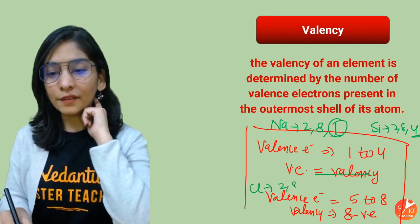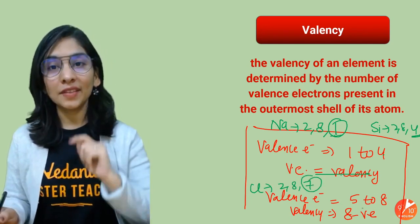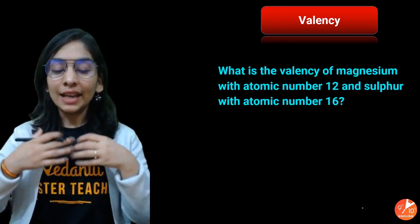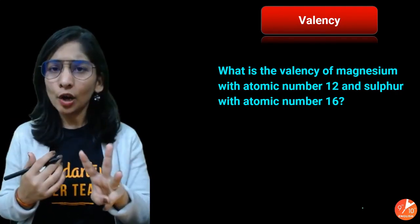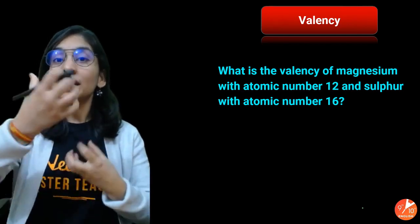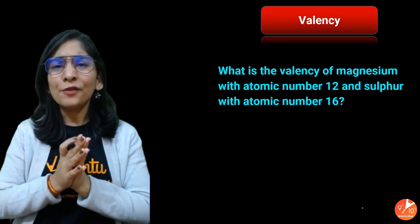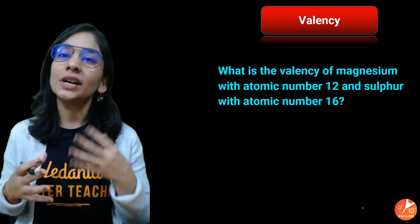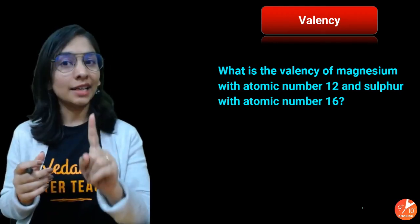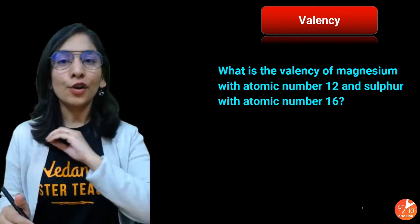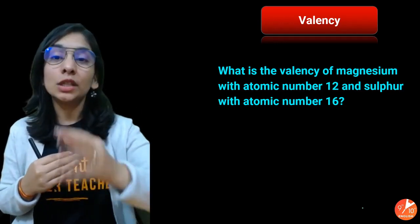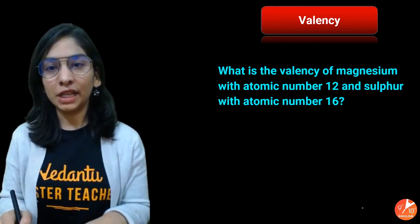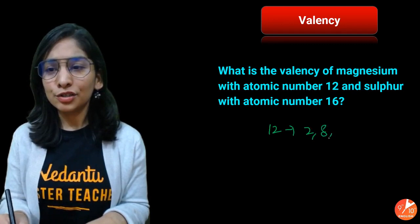Valency is the combining capacity of an element — it tells how an element combines with another. An element has three options: lose electrons, gain electrons, or share electrons — all just to achieve a stable configuration, to follow the octet rule (or duplet rule for the first shell). Metals generally have 1, 2, or 3 valence electrons and have the capacity to donate electrons. Non-metals with 5, 6, or 7 valence electrons gain electrons. Elements with valence electron count of 4, like silicon and carbon, generally share electrons.